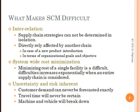The second challenge is minimizing system-wide cost. Minimizing cost for a single facility is difficult, but in a supply chain the cost must be minimized for the entire chain. The third — and most uncertain — part of supply chain is customer demand, which can never be forecasted exactly. Travel time is never certain either; trucks or machines can break down. These are uncertainties in supply chain that we cannot avoid.